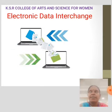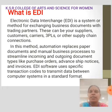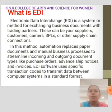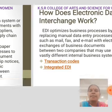E-commerce: Electronic Data Interchange. What is EDI? Electronic Data Interchange is a system or method for exchanging business documents with trading partners. This can be your suppliers, customers, carriers, 3PLs, or other supply chain connections. In this method, automation replaces paper documents and manual business processes to streamline incoming and outgoing document types like purchase orders, advance ship notices, and invoices. EDI software uses specific transaction codes to transmit data between computer systems in standard formats.